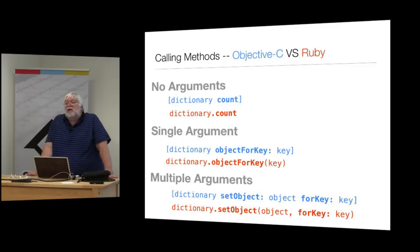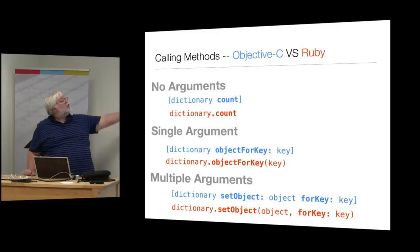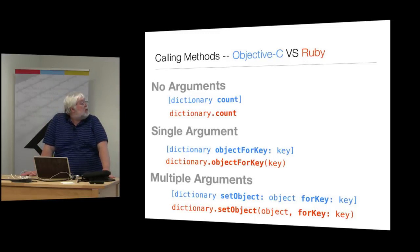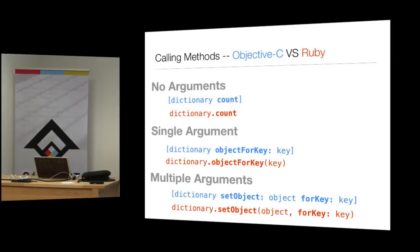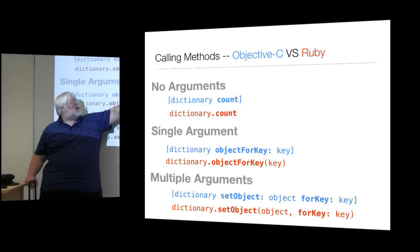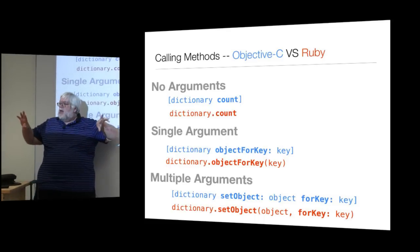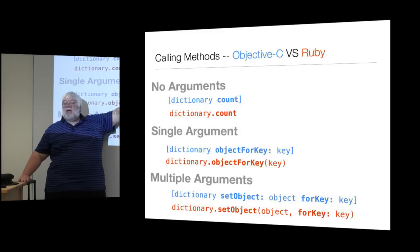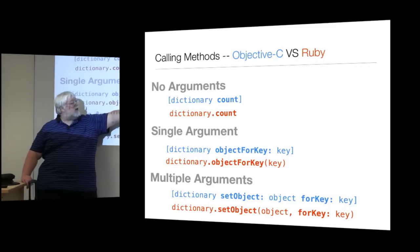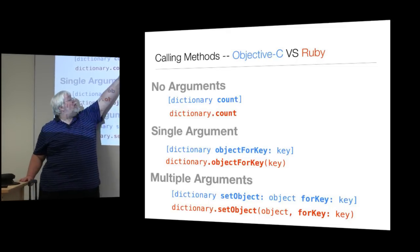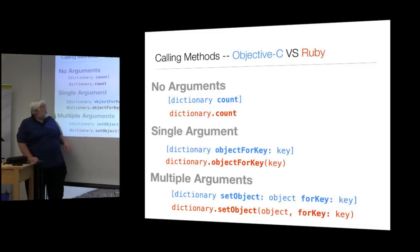For methods with no arguments in Objective-C, you send a message like 'count' to a dictionary. In Ruby you use dot notation: dictionary.count - a direct translation. For a single argument in Objective-C, you add a colon: 'objectForKey:' - the colon is part of the name and indicates it takes an argument. In Ruby you just say 'object_for_key' and pass a normal argument. So far these two versions are essentially identical.